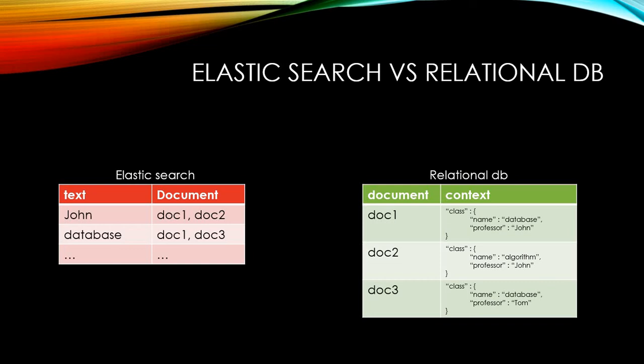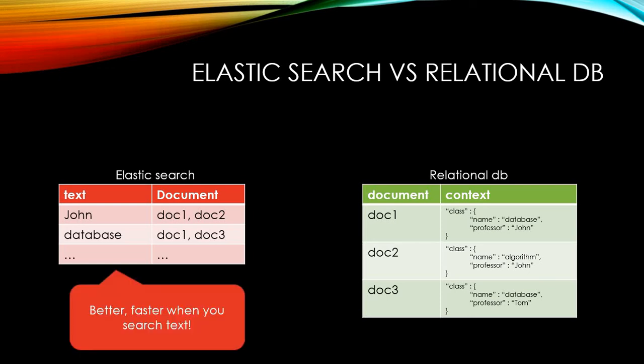If you are familiar with Big O notation, Elasticsearch is like O(1), while a relational database is O(N). In short, when it comes to search, Elasticsearch guarantees much faster performance.